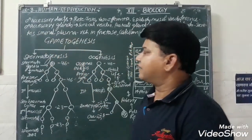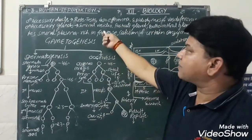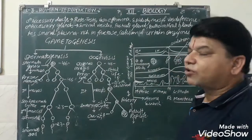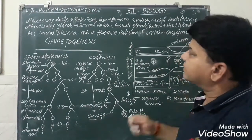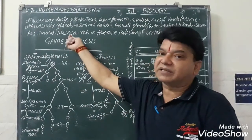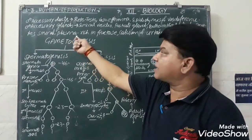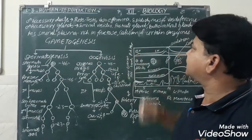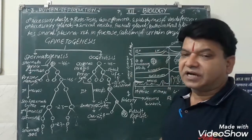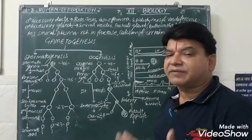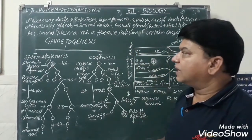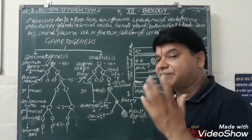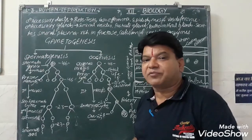The main accessory glands include the seminal vesicles, prostate glands, and bulbourethral glands. They secrete the seminal plasma. This is a very important question — seminal plasma is rich in fructose, calcium, and certain enzymes. Seminal plasma is secreted by these glands and plays an important role in the process of reproduction.